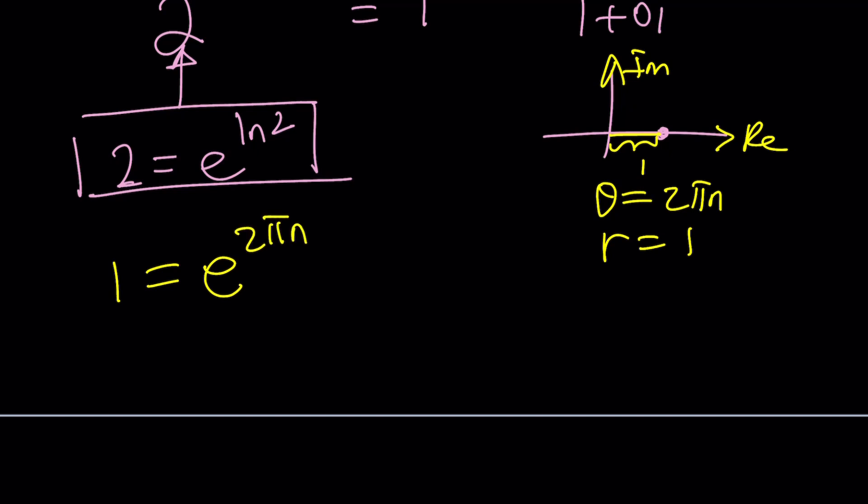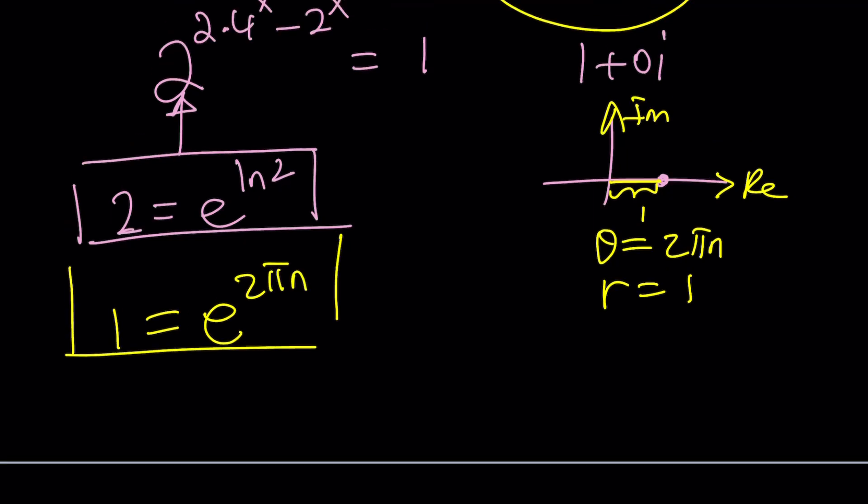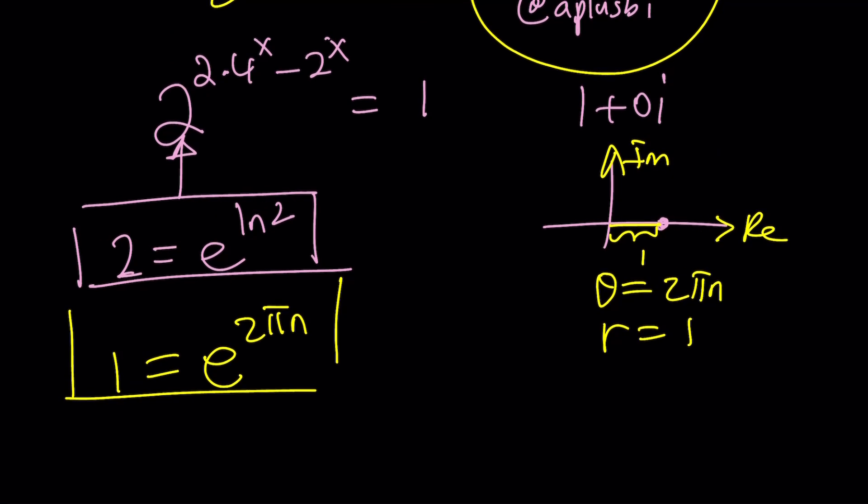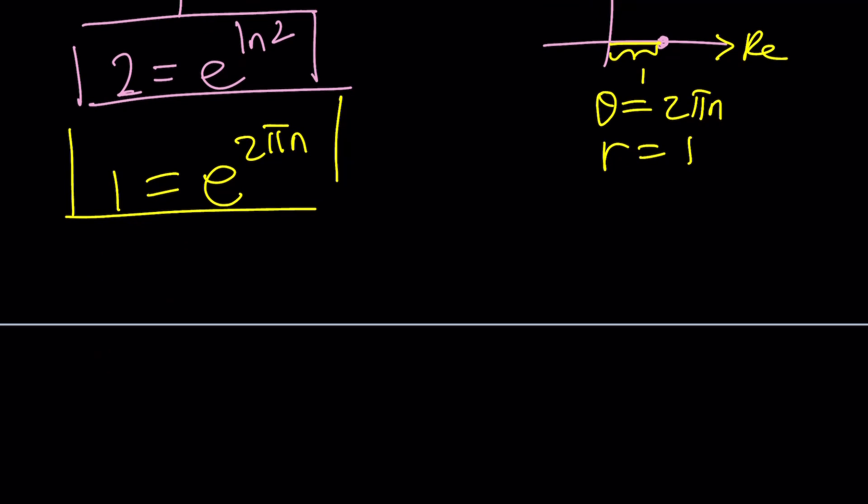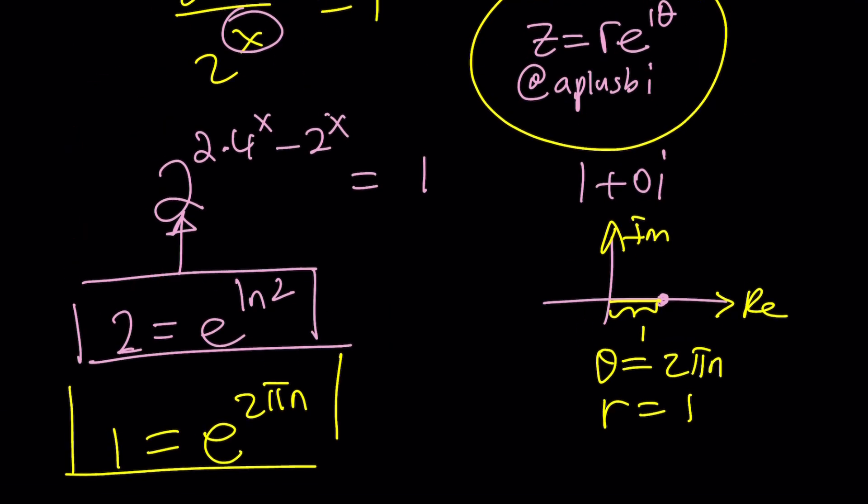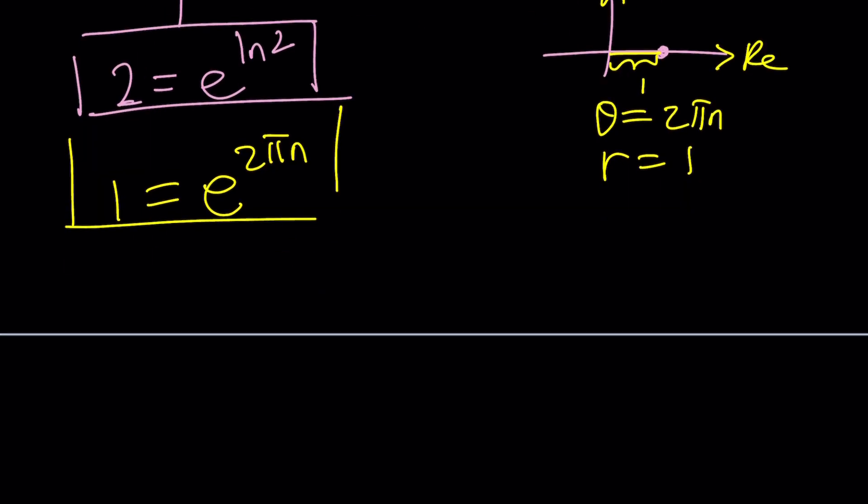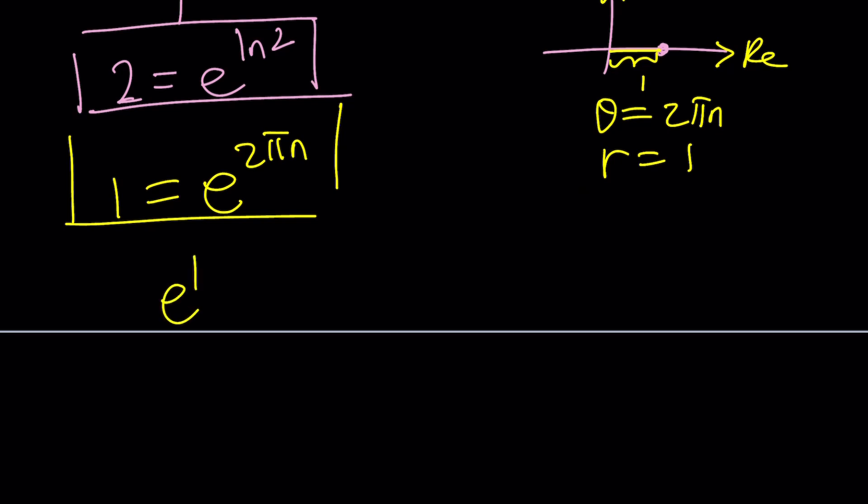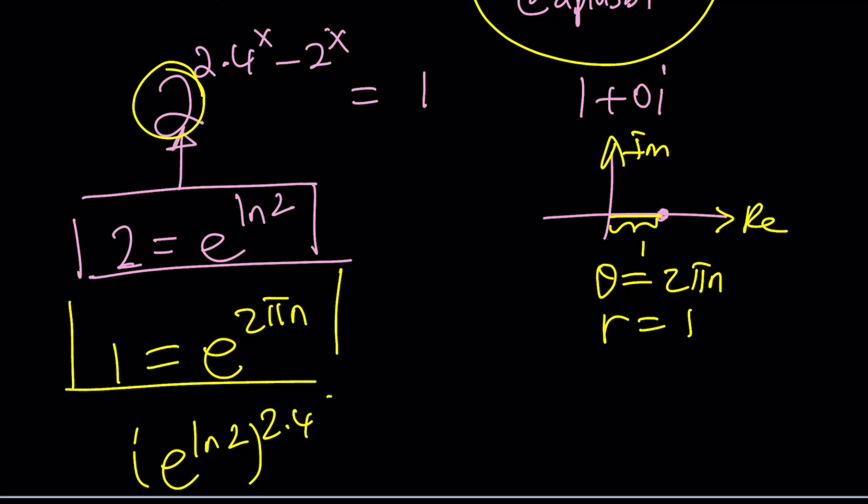Now let's plug these in. We replace 2 with e to the ln 2. So it's going to be e to the power ln 2 to the power 2 times 4 to the x minus 2 to the x equals e to the power 2 pi n i. Multiply the exponents like this, and then set them equal to each other.